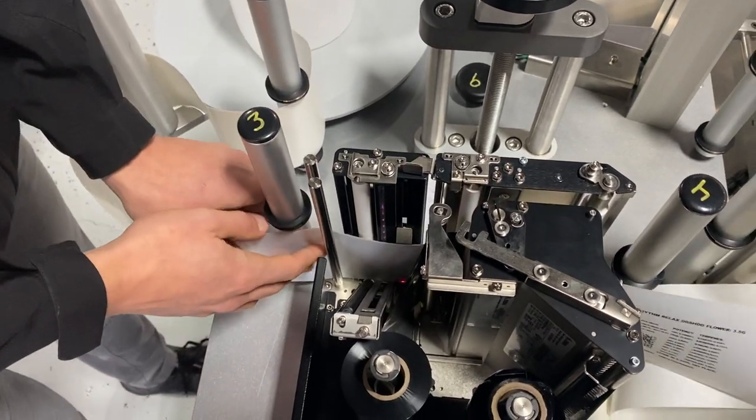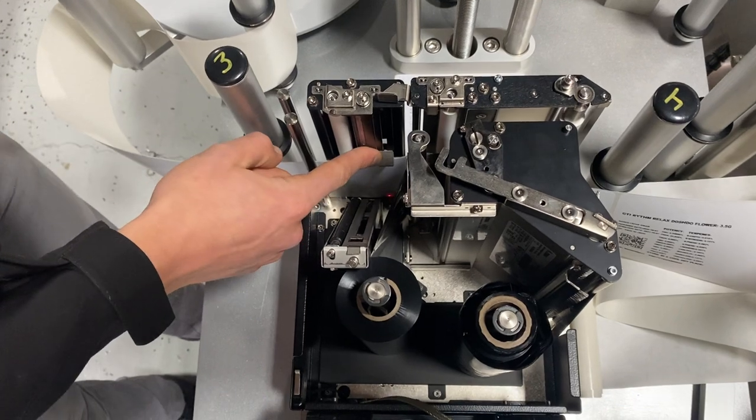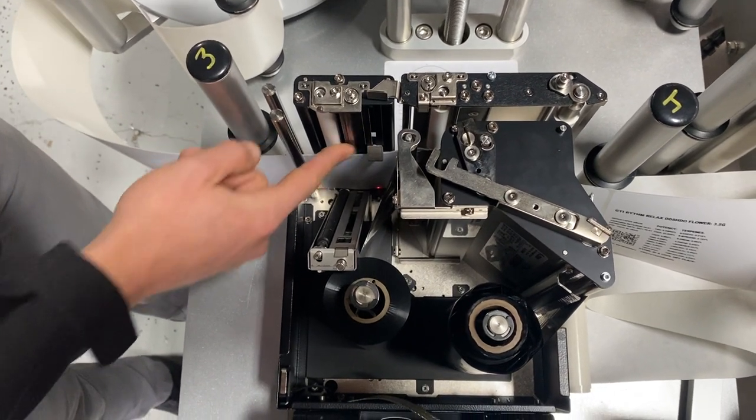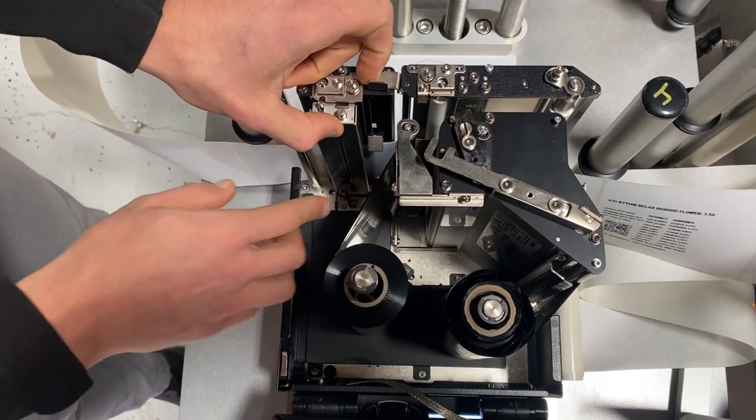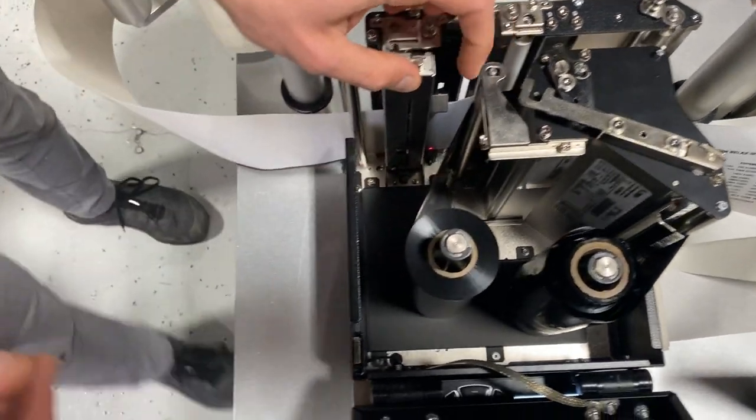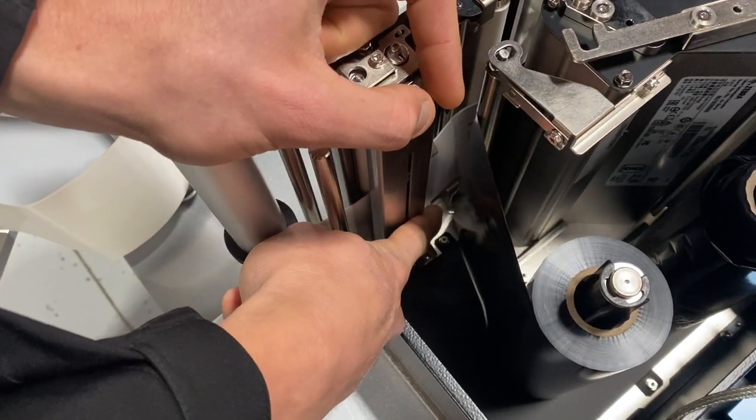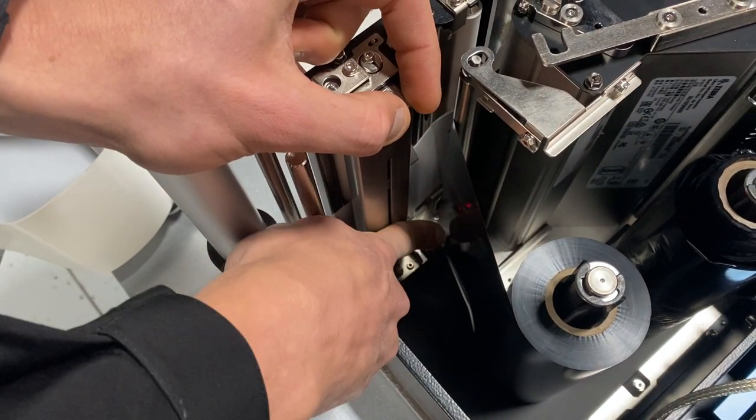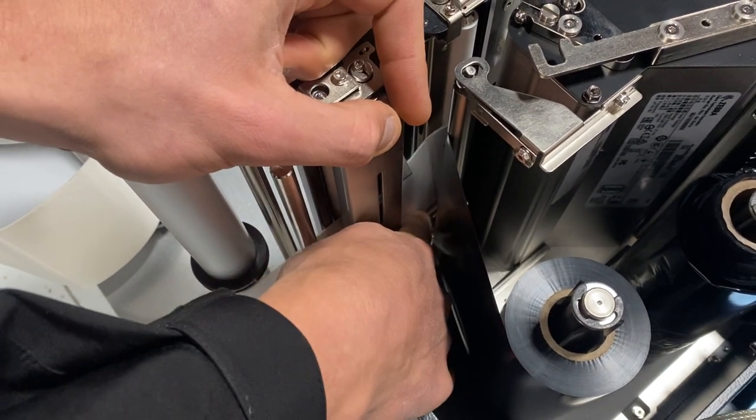I'm going to come down. Now a couple of key things, if you can notice in here, is here I've got another web guide to help track properly through the zebra printer. And then also too, if we come around to the edge, you're going to see a little metal plate down there.